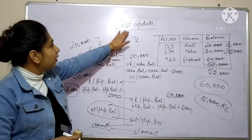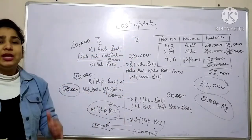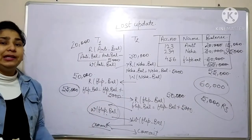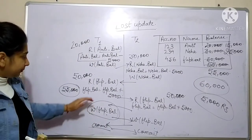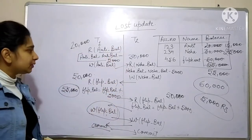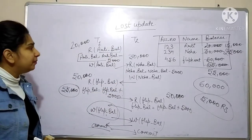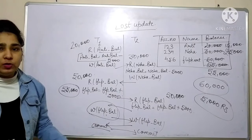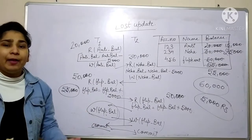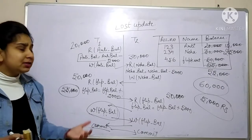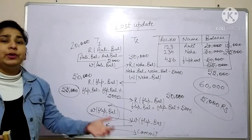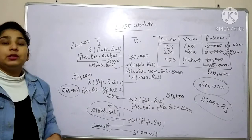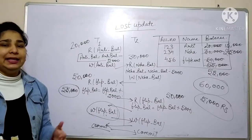This is called the lost update problem — whatever changes the first transaction makes to the Flipkart balance are completely lost. We will find solutions to manage this kind of problem. We definitely have to execute multiple transactions in parallel because speed is a necessity today, so we have to handle these problems to get the right output.